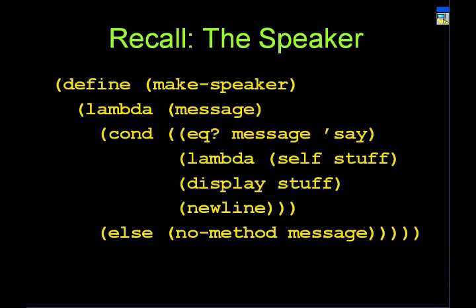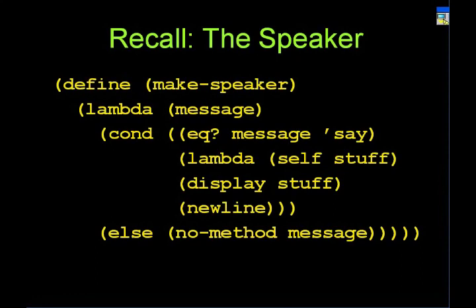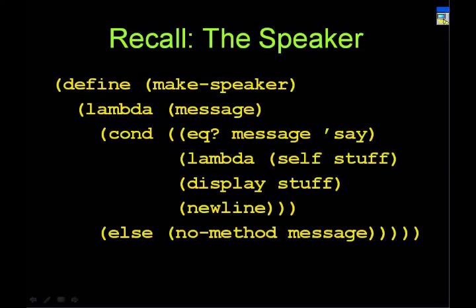Recall this — it should look very familiar to you by now. We are creating a speaker here. So here we have this lambda message; this is the body. We've seen this a million times. We check if message is 'say', and if it is, we'll execute this method. Otherwise, it will just return that there's no such method. This should be very basic to you.